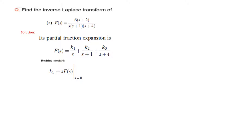Now we take help of the residue method. As we have discussed earlier, in the residue method we multiply the signal f(s) with the denominator part of the variable whose value we want to find. Here we want to find the value of k1, so we will multiply f(s) by s. We multiply f(s) by s and also put this denominator term equal to 0, so the condition becomes s equals 0.